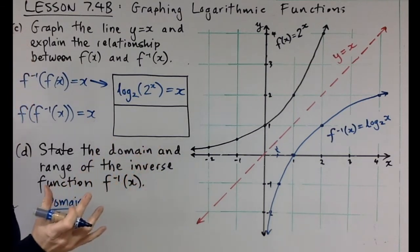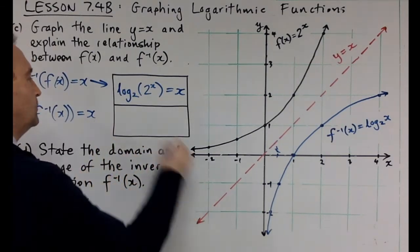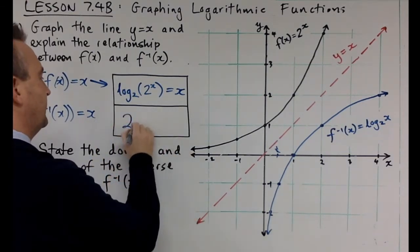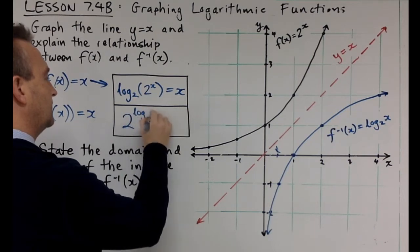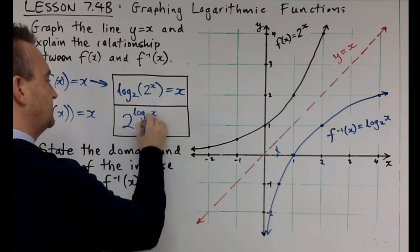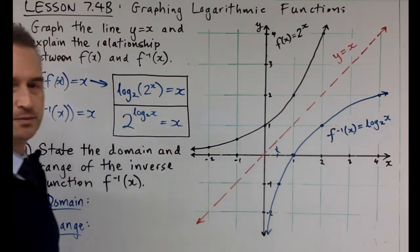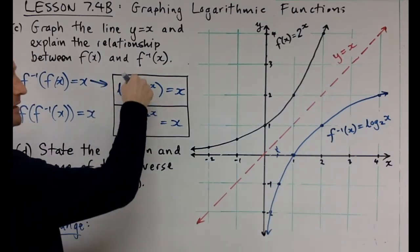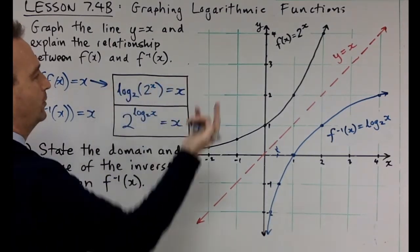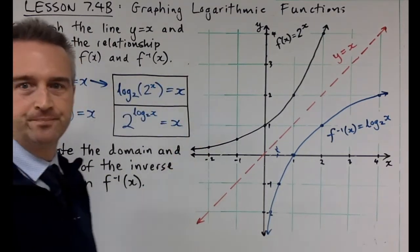Similarly, in the opposite direction: 2 to the power of log x base 2 also equals x. So whenever you see that combination, the log base 2 and the 2 to the power of cancel each other out. These identities are very handy and generalise — you could use a 5 or a 3 or any valid base instead of 2.